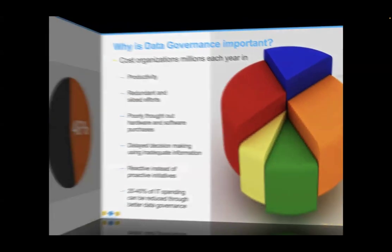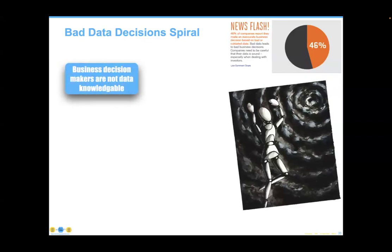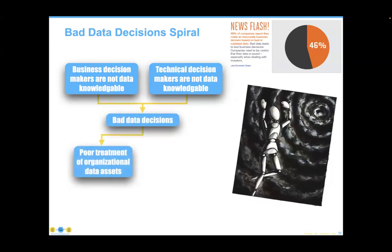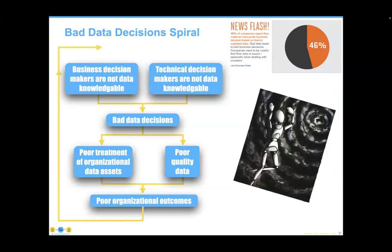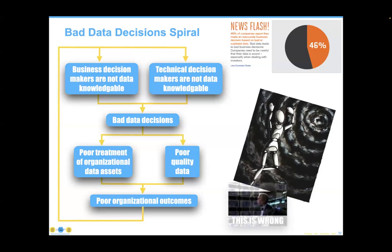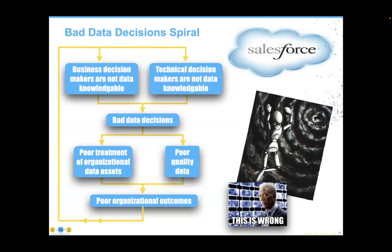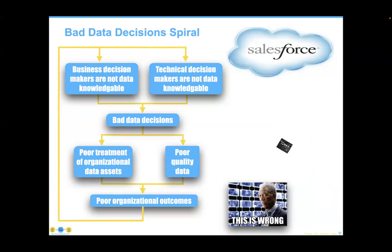This is the bad data decision spiral: many organizations are making bad business decisions based on data, because business decision makers are not data knowledgeable — and neither are technical decision makers. This leads to bad data decisions, poor treatment of organizational assets, and poor quality data, which in turn leads to poor organizational outcomes. A specific example: Salesforce is really good software, but if we install it by an arbitrary January 1st deadline without proper data preparation, it can be really problematic.